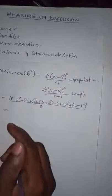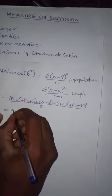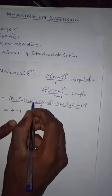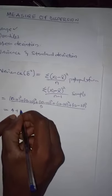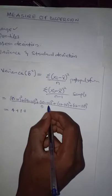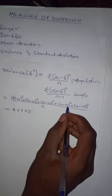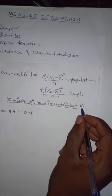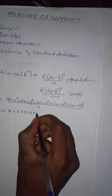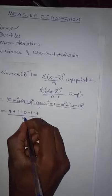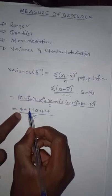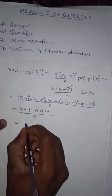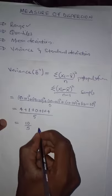Evaluating: negative 2 squared is positive 4; 9 minus 10 is negative 1, squared is positive 1; 10 minus 10 is 0, squared is 0; 11 minus 10 is 1, squared is 1; 12 minus 10 is 2, squared is 4. So we have 4 plus 1 plus 0 plus 1 plus 4, which equals 10. We have 10 over 5, which is equal to 2.